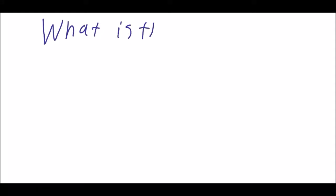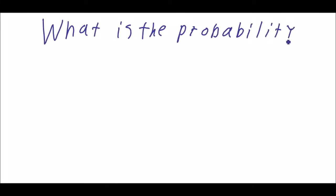Hello and welcome back to my little video series about the mathematics of tennis. At the end of the first video I asked the question: what is the probability for player A of winning the match given the probability of winning the set?